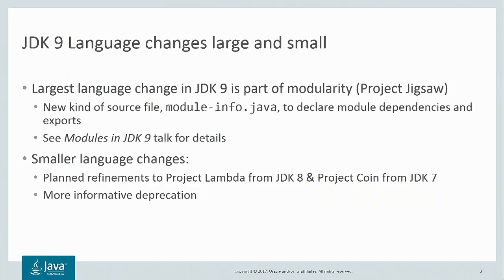For the smaller language changes made in JDK 9, they come in two categories. One is a set of planned refinements for Project Lambda from JDK 8 and Project COIN from JDK 7, and the second set of changes involves making the deprecation facility more informative.